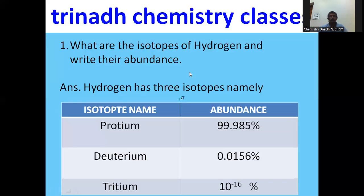What are the isotopes of hydrogen and what is their abundance? Isotopes are species having the same atomic number but different mass numbers. Thus, species having the same atomic number and different mass numbers are called isotopes.